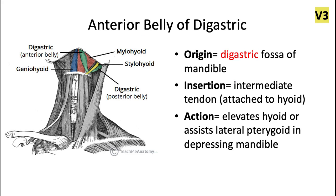The anterior belly of the digastric originates from the digastric fossa of the mandible and inserts into the intermediate tendon. That's the part that attaches to the hyoid bone, and the action is to elevate the hyoid or assist the lateral pterygoid in depressing the mandible.